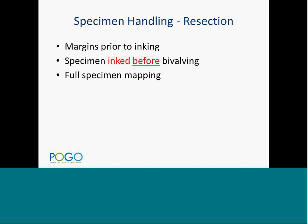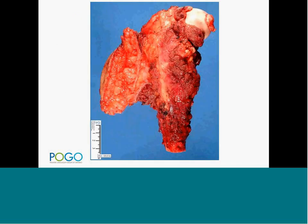On resection specimens, we need to paint the margins before making any cuts — this is critical so we don't compromise margin assessment. We must assess the preoperative induction chemotherapy effect on the tumor. To do that, the pathologist must perform full specimen mapping, correlating gross and microscopic findings, which I'll explain in the coming slides.